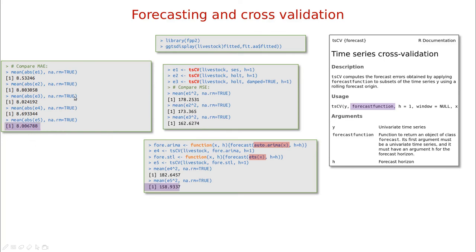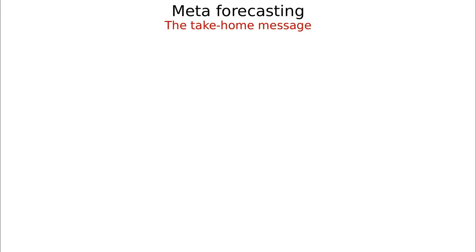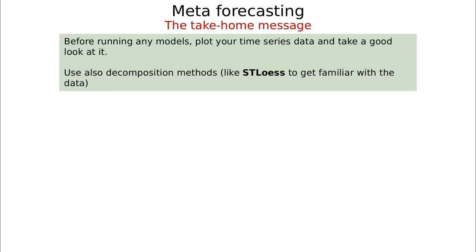So ETS wins here, but winning isn't the only thing that matters. If you want to capture the data-generating process behind the model, go for ARIMA. If you want to properly describe the trend and seasonality with the remainder being just pure noise, you'd probably use ETS. Here's the take-home message: plotting is the best thing you can do in any machine learning problem. Before running anything, you can get a good grasp of the data.